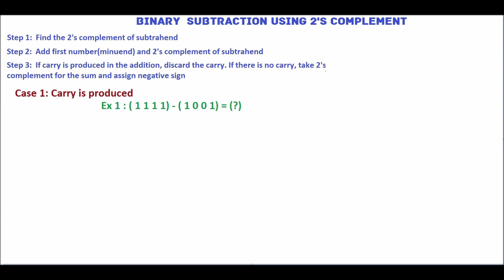In this tutorial, we will see how to subtract two binary numbers using the 2's complement method. We'll solve this example. Let's take the numbers as X and Y.